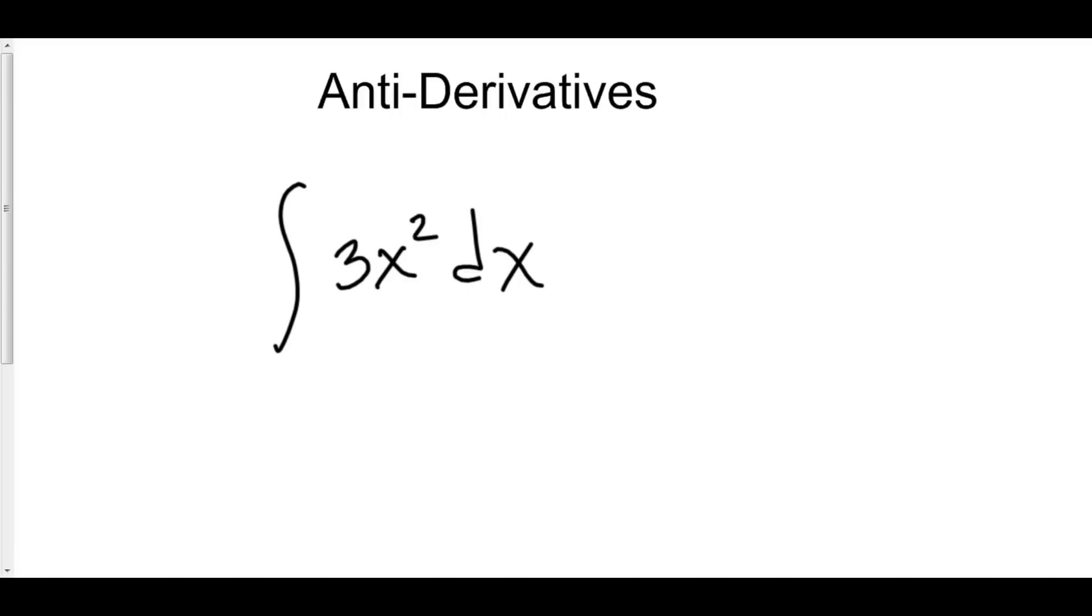It's the opposite of a derivative. So what this problem is asking us is, the derivative of what is 3x squared? That's what an antiderivative is. We're going to go up the ladder of derivatives instead of down the ladder of derivatives.